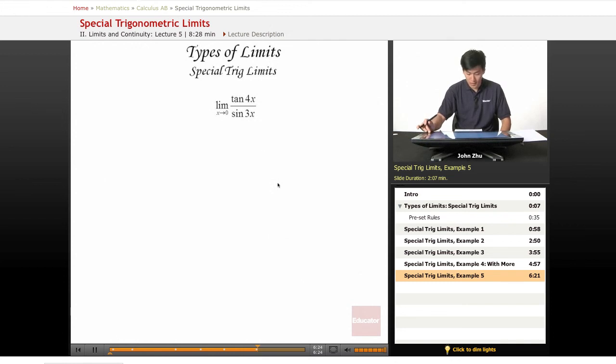Now we have a tangent over a sine. We can always split up a tangent expression into a sine over cosine expression to simplify everything.